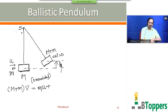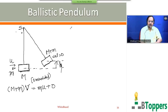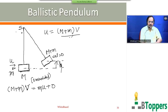The initial momentum of the system before collision is the initial momentum of the bullet plus the initial momentum of the block. The initial momentum of the bullet just before collision is small m times U. The initial momentum of the block before collision is zero. The momentum of the combined system just after collision is (M + m)v. From this, we can write U = (M + m)v / m.